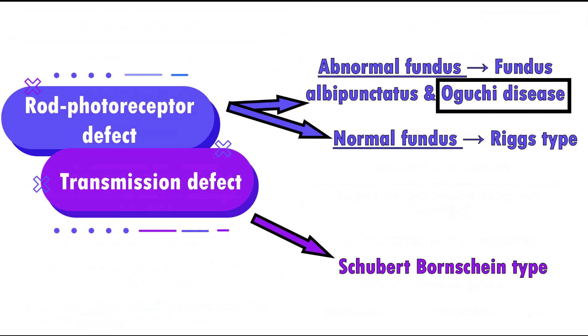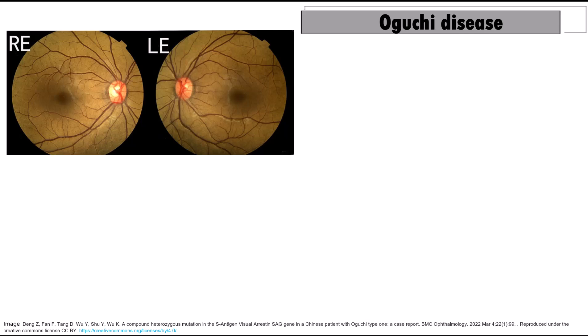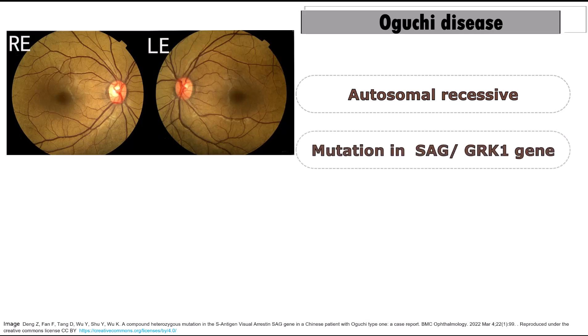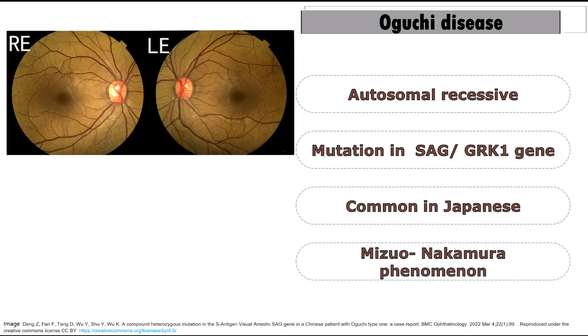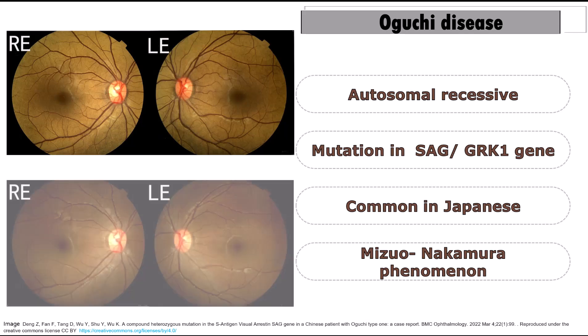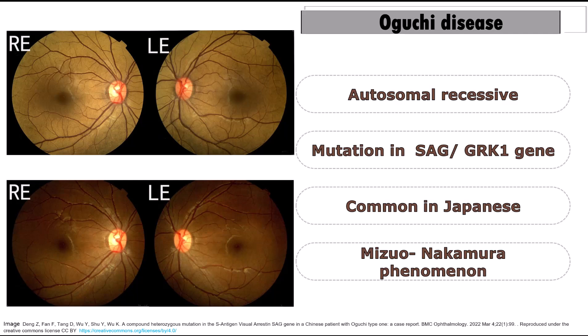Next, Oguchi disease. Oguchi disease is a type of congenital stationary night blindness with an autosomal recessive inheritance and a mutation in either the SAG or GRK1 gene. It is common in the Japanese. The characteristic feature of this condition is the Mizuo-Nakamura phenomenon, which is a reversible variation in fundus appearance from a golden sheen with no other abnormalities, and which normalizes after dark adaptation.